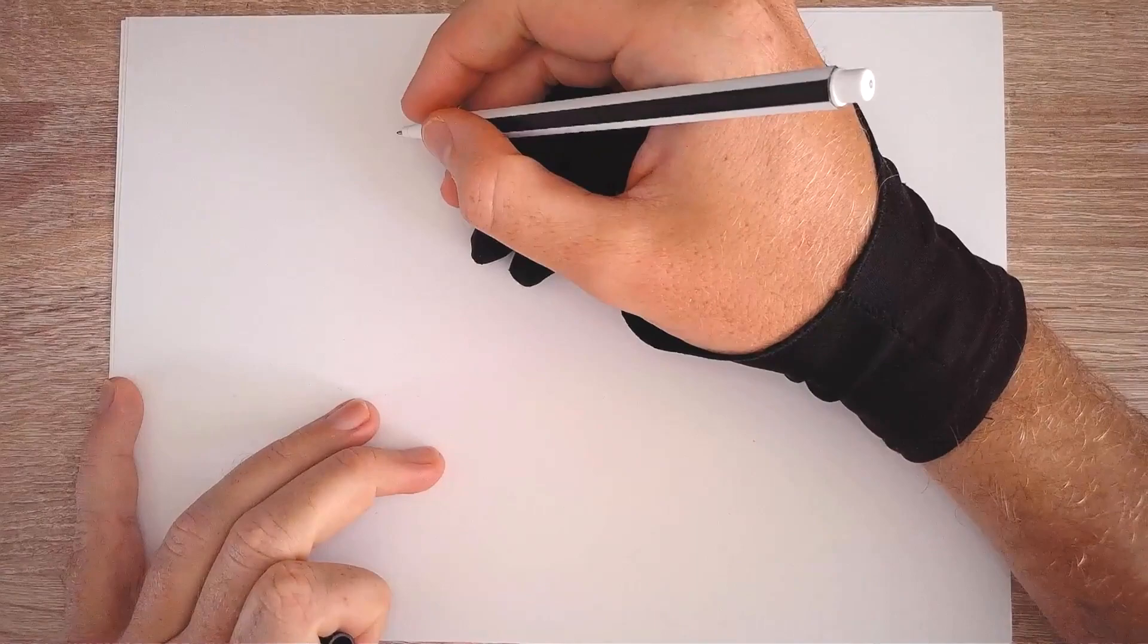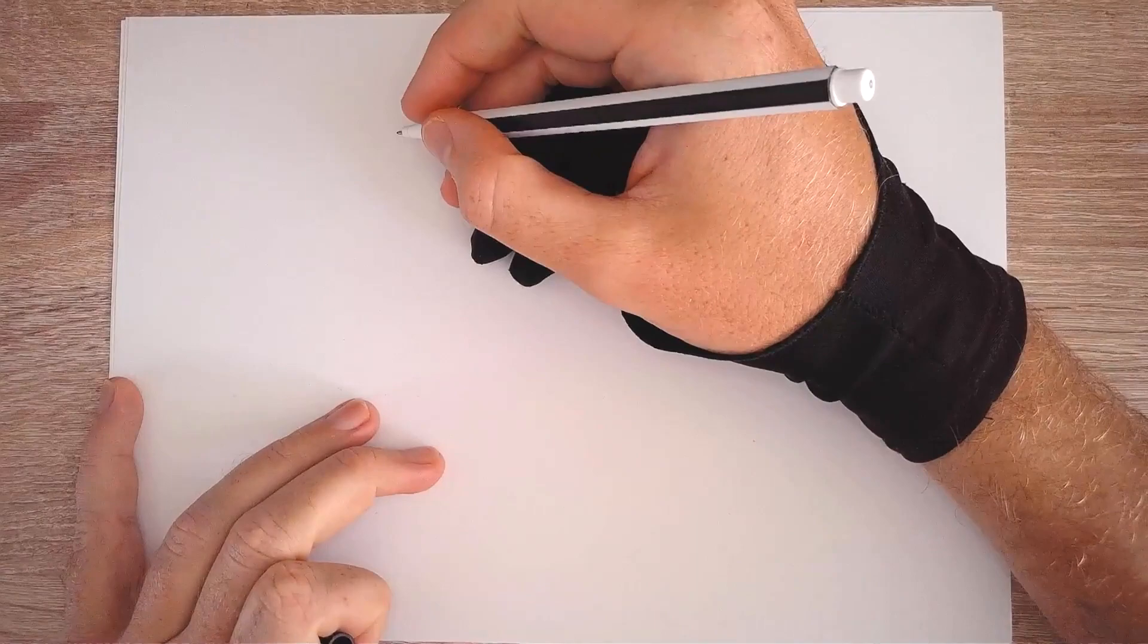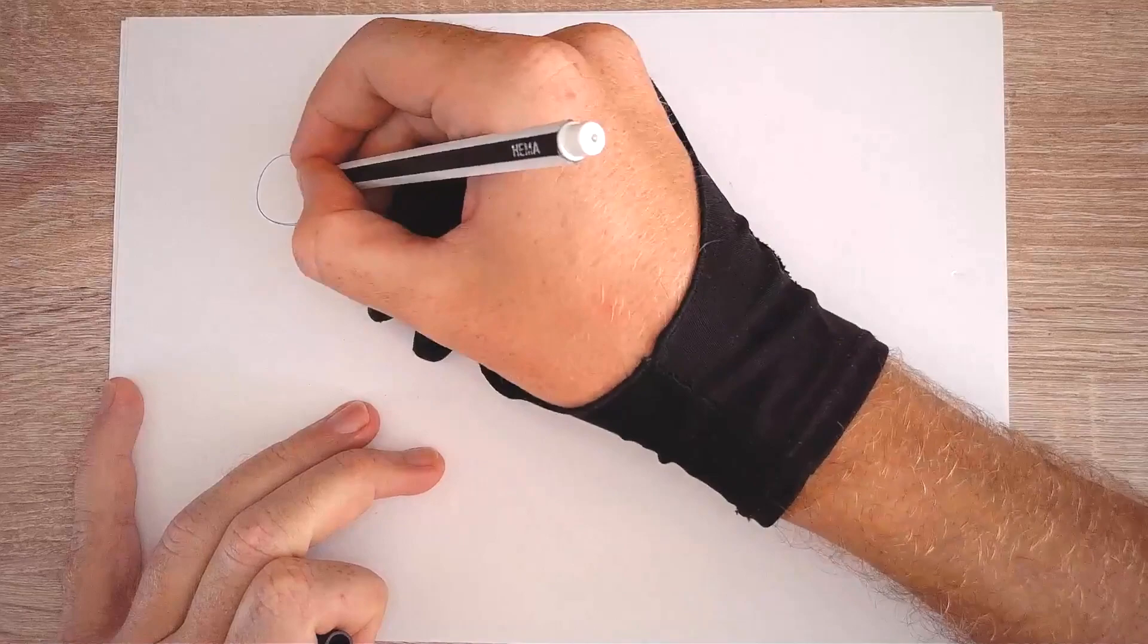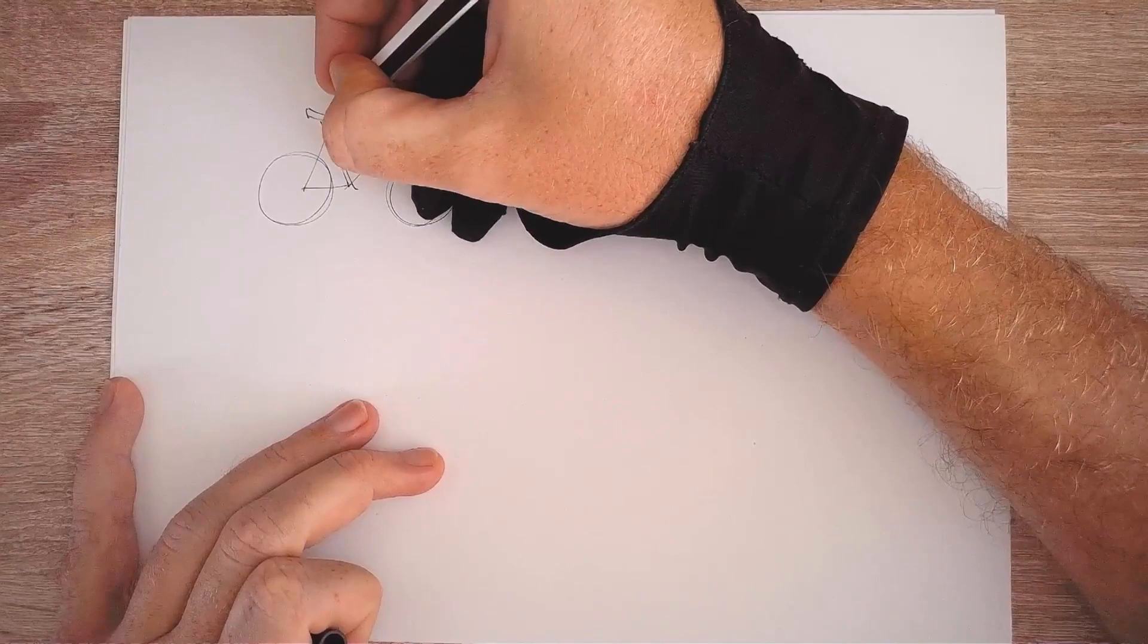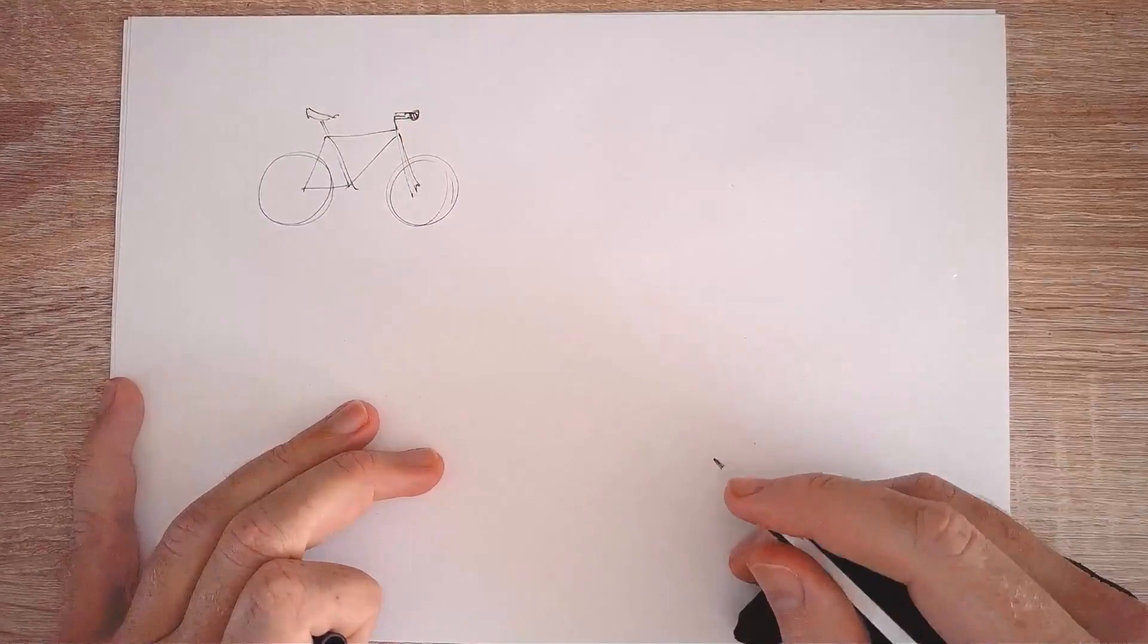Let's just do the simplest possible drawing, which usually is one wheel, another wheel, and then two triangles. One goes like this, the other one goes like that. Then we have the fork in the front, we have the saddle coming out of this little thing, and then we have a stem holding a handlebar there. So this is the fastest, easiest way to draw a bike.